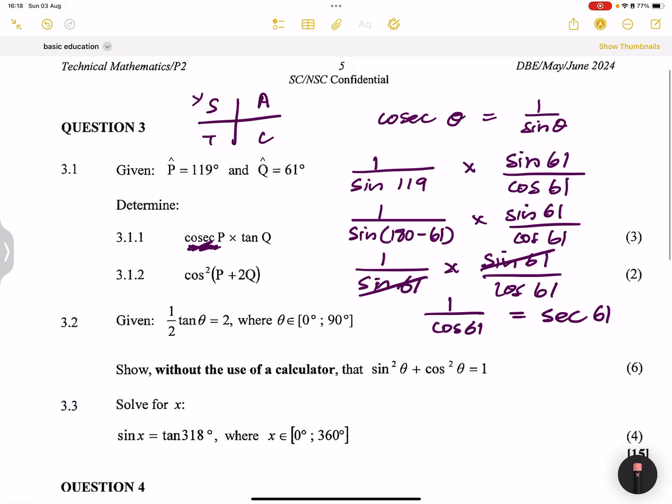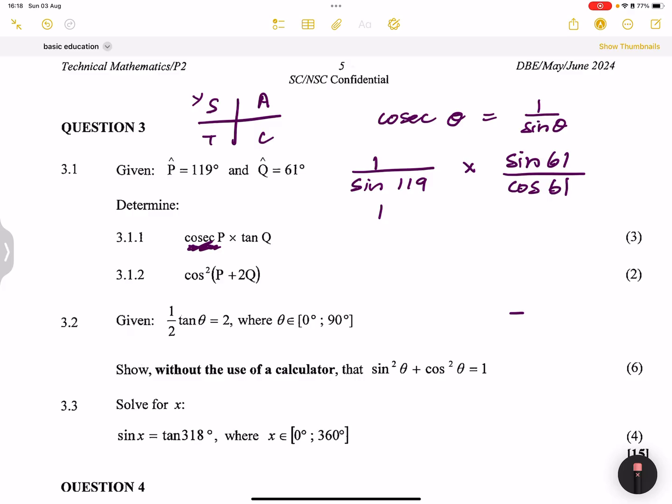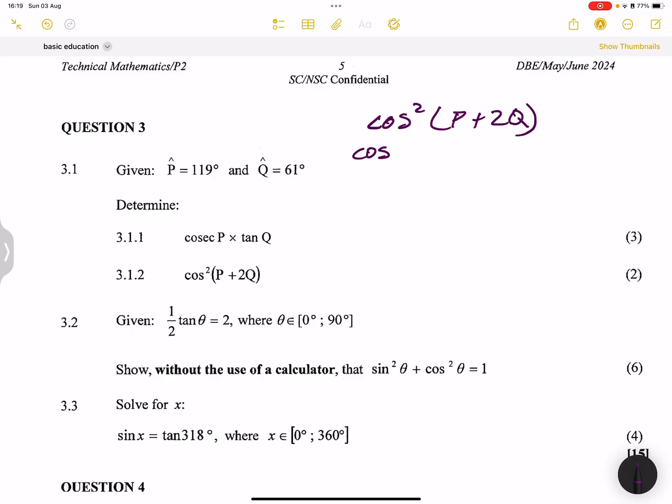That is 3.1.2. Okay. So I think this is probably the way that they wanted us to go about answering this question. However, as I said, they did not say anything about not using a calculator. Right. So that second question says we take cosine squared of P plus 2Q. All right. So that would be cos squared of P is 119 plus two times Q. So that's two times 61.